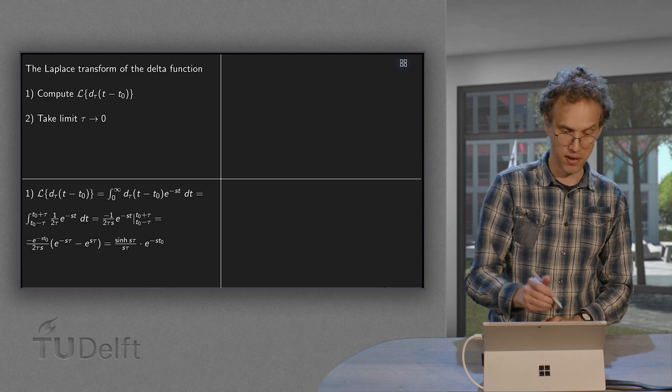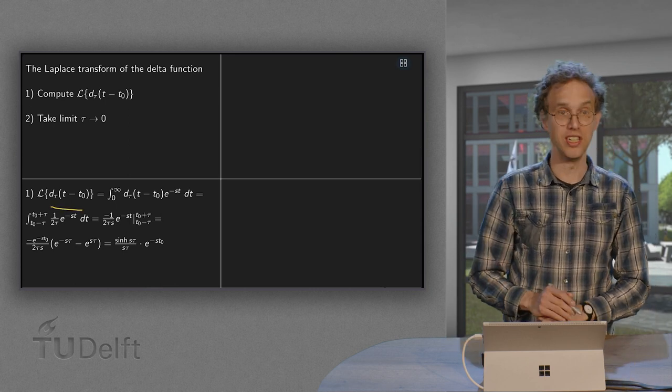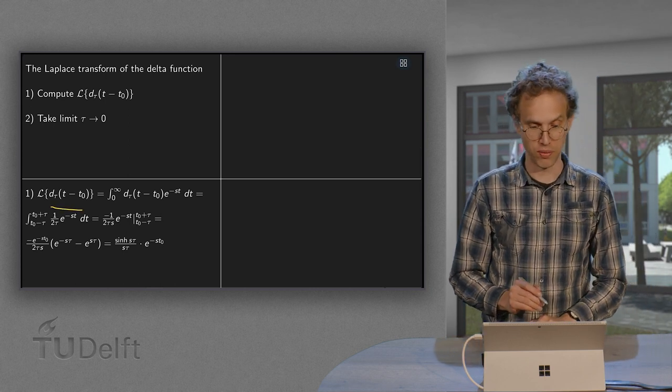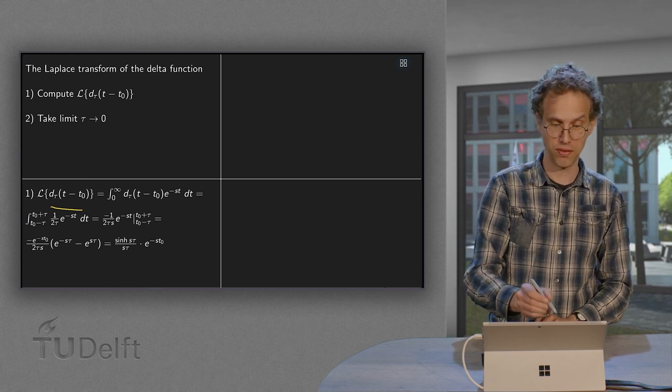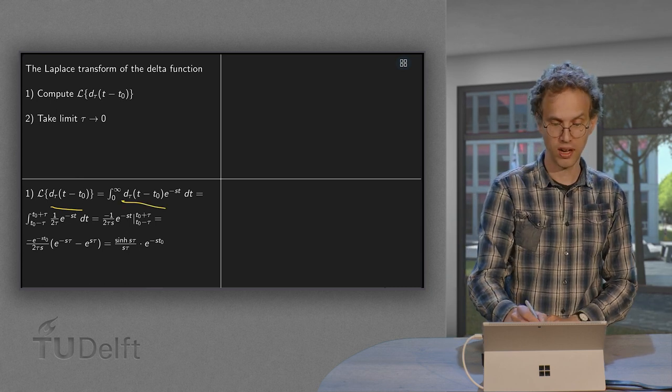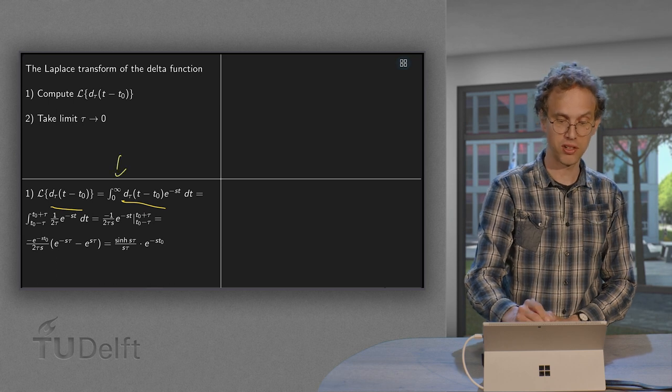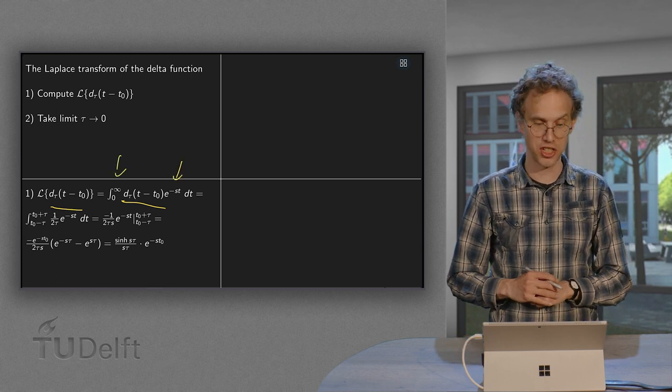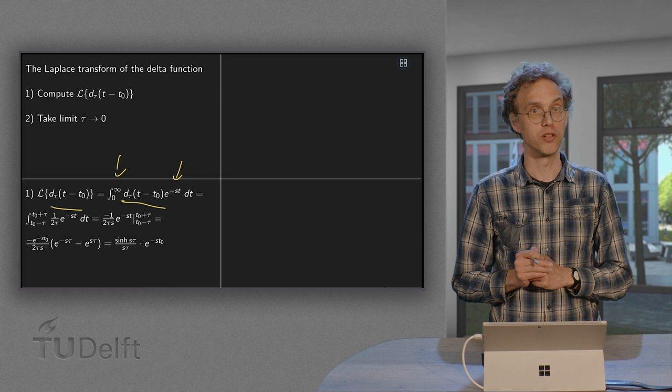So step one, take the Laplace transform of those d_τ. So what do we need to do? Fortunately, that is not so difficult. We put the d_τ in. Again, the integral from zero to infinity and the e to the power minus st. So what do we do?